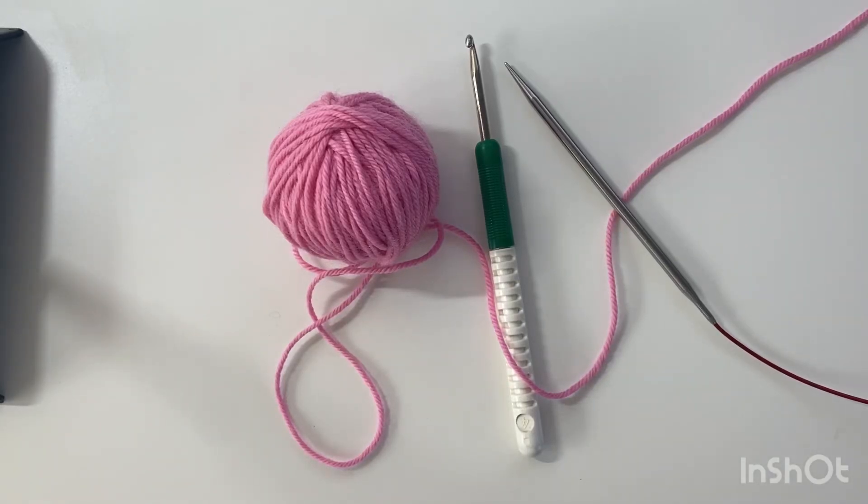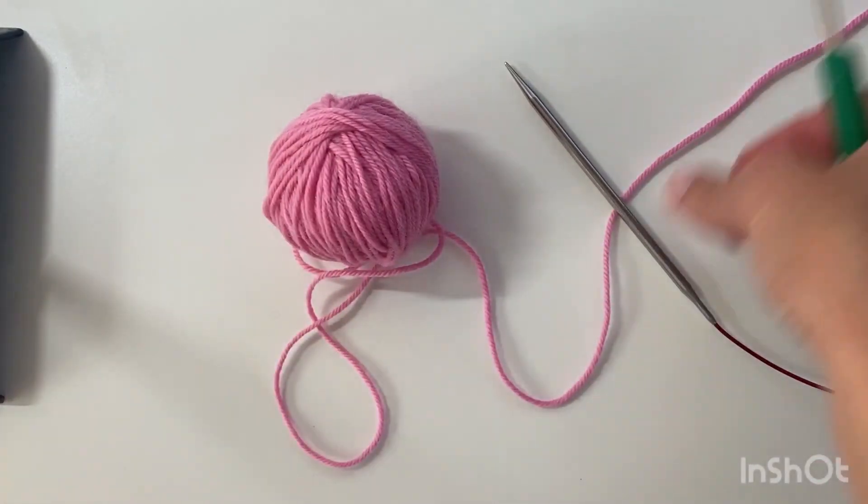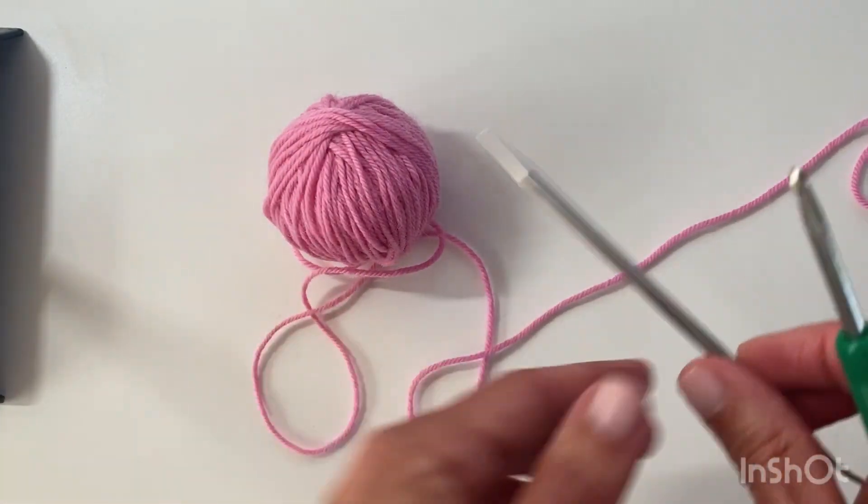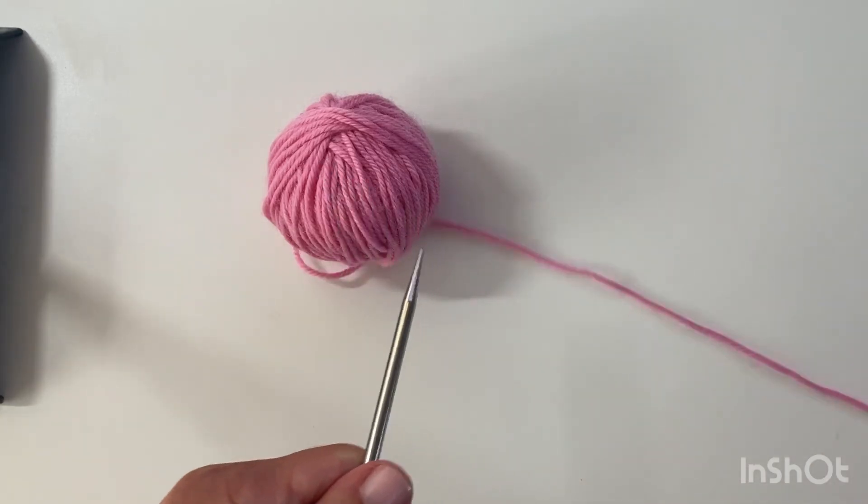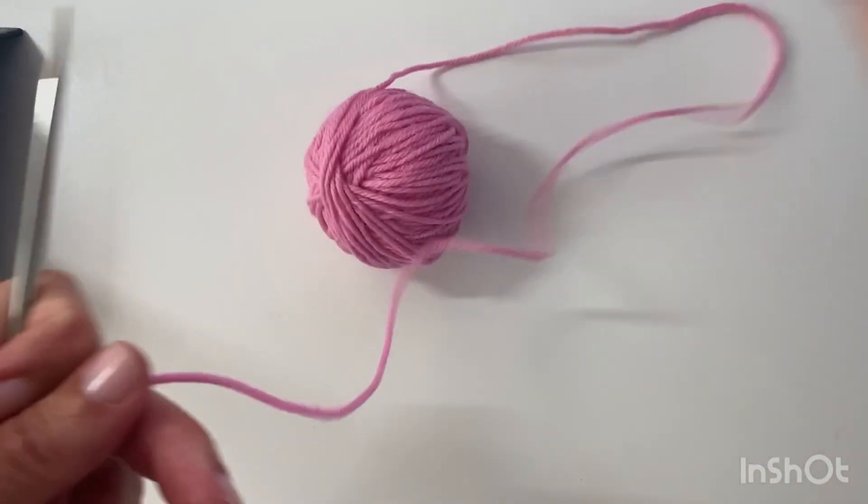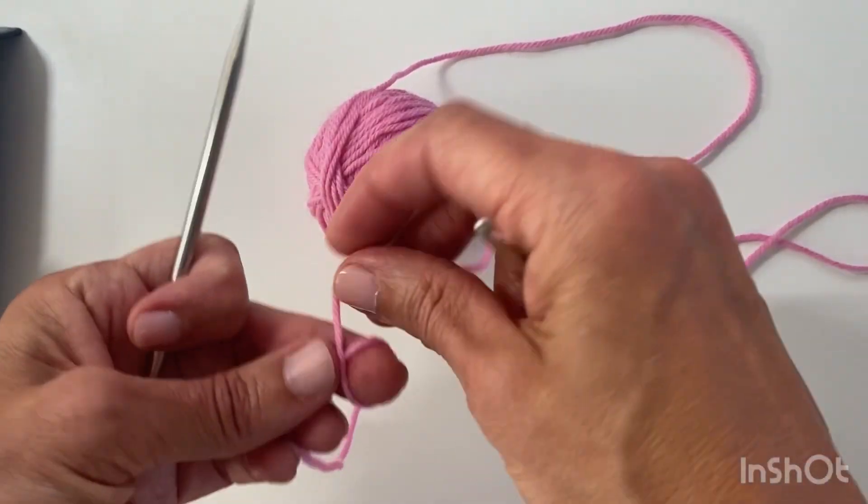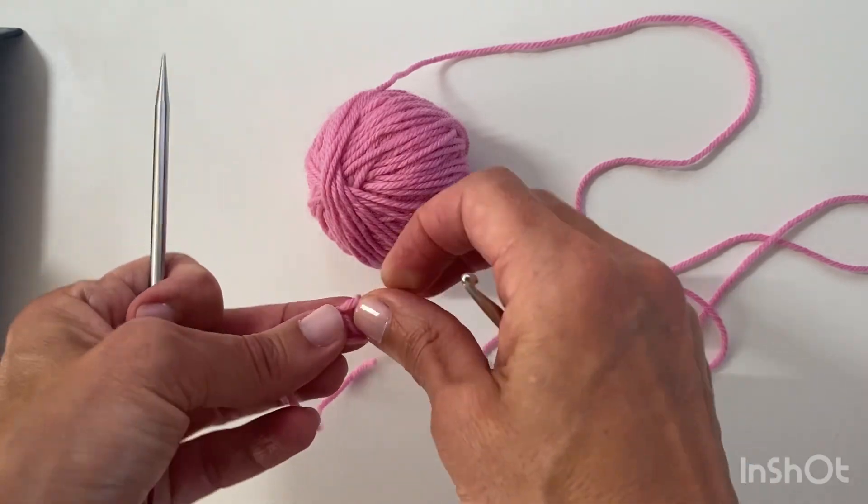In this video I'll be demonstrating the crochet provisional cast on. So I need a crochet hook that's about the same size as the needle and a ball of yarn. I start with a slipknot, but instead of putting the slipknot on the needle, I'll put it on the crochet hook.